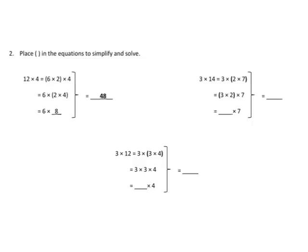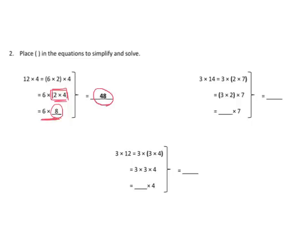Now we're going to fill in all the blanks, still using the associative property, but this time without showing the arrays — just doing it mathematically. Up here in the upper left-hand corner, we started with 12 times 4. Since 12 is a bit large, it's factored down to 6 times 2. So now it's 6 times 2 times 4 instead of 12 times 4. Using the associative property, 2 times 4 is 8, and then 6 times 8 is 48. Pretty straightforward.